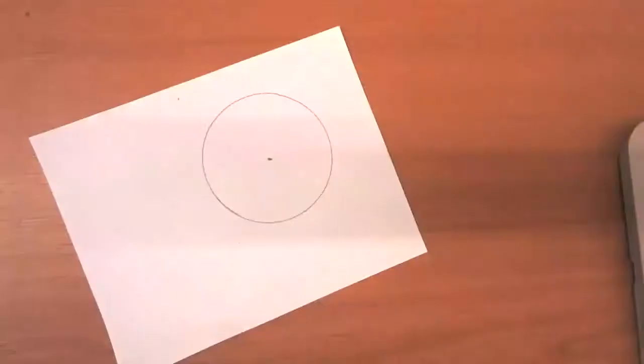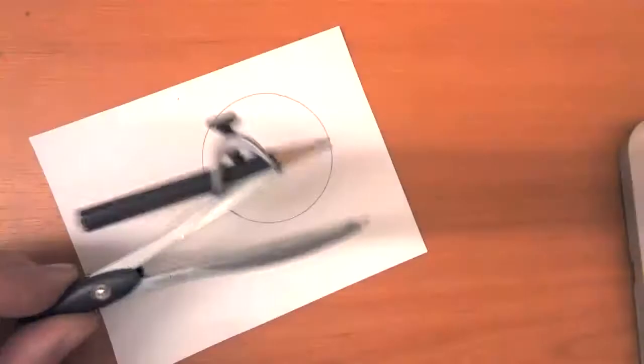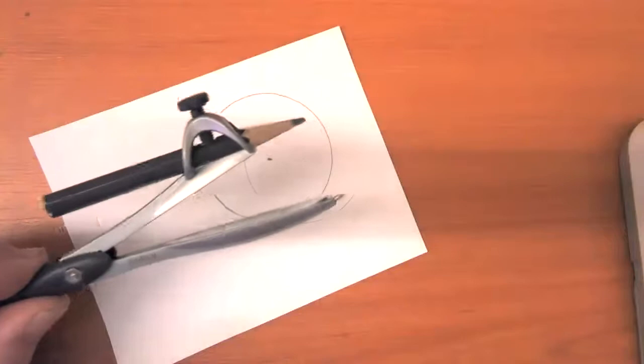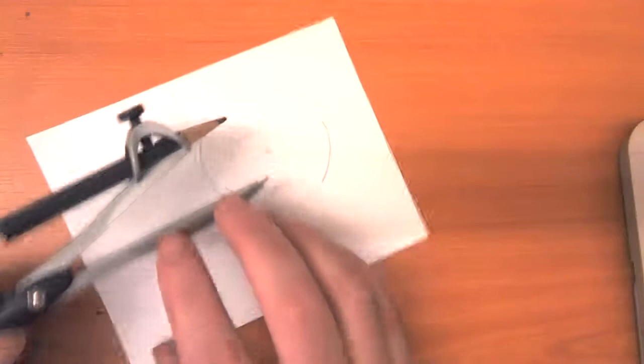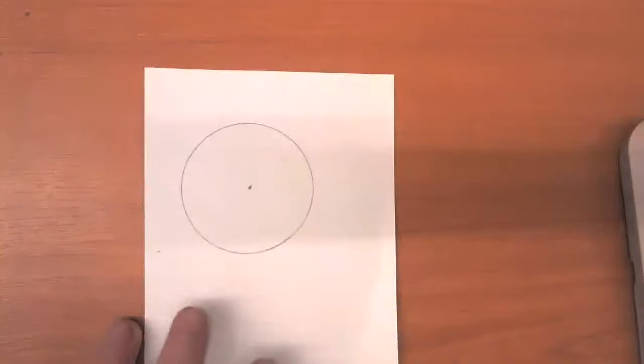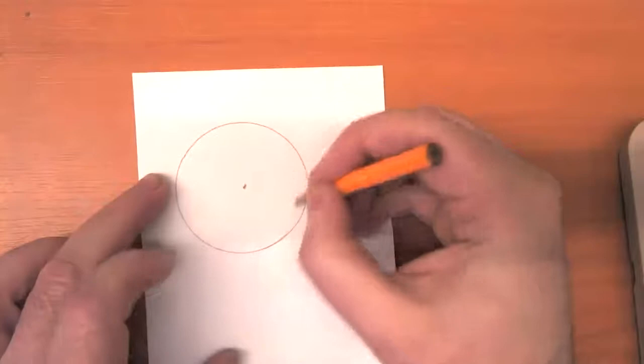Remember, we learned that when we were drawing circles with this compass tool. And so the distance between this pointy end and the pencil never changed. And so as long as this pointy end stayed on this center, everywhere the pencil drew was the same distance from the center. So that's what makes a circle a circle. A circle is a shape where every point on the boundary is the same distance from the center.